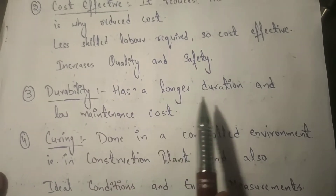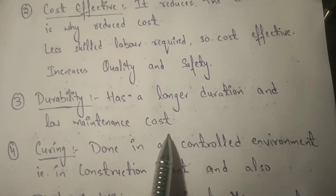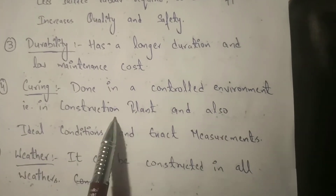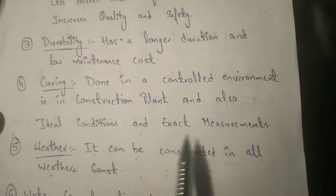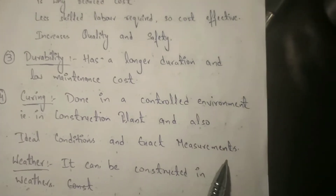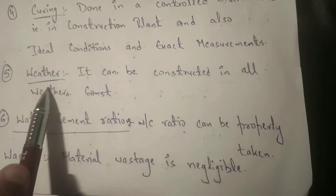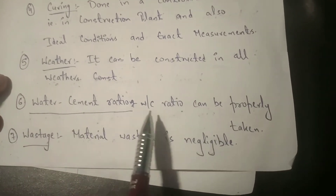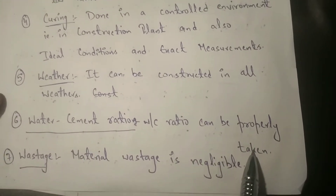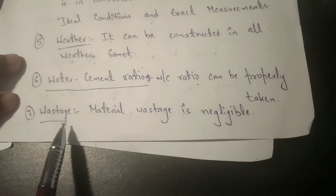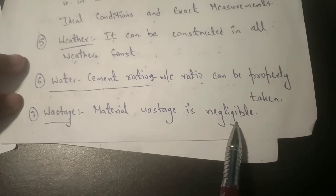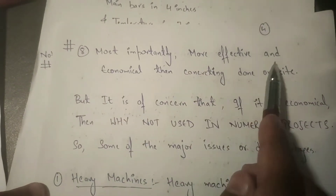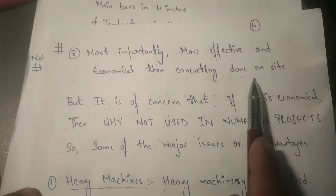Third is durability — it has a longer lifespan and low maintenance costs. Fourth is curing — it is done in a controlled environment, that is, in a construction plant, where ideal conditions and exact measurements are provided. Fifth is weather — it can be constructed in all weather conditions. Sixth, water-cement ratio can be properly controlled. Seventh, material wastage is negligible. Overall, it is more effective and economical than concreting done on site.